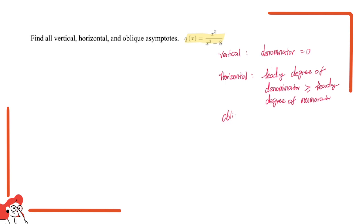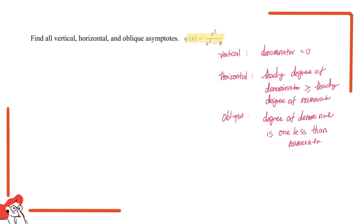The last one — oblique asymptotes. An oblique asymptote is an asymptote along a line y = mx + b where the slope is not zero. Oblique asymptotes occur when the degree of the denominator is one less than the degree of the numerator. For example, if the degree of the denominator is two and the degree of the numerator is four, then there should be oblique asymptotes.